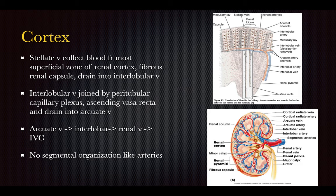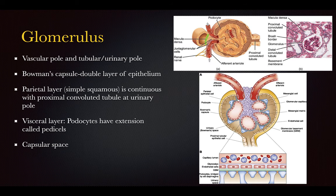In the cortex, stellate veins collect blood from the most superficial zone of the renal cortex and the fibrous renal capsule, draining into interlobar veins. These are joined by the peritubular capillary plexus and ascending vasa recta, then drain into the arcuate veins. Arcuate veins drain into interlobar veins, then the renal veins, and finally into the inferior vena cava. There is no segmental artery organization in the venous system.